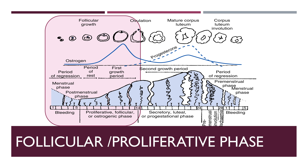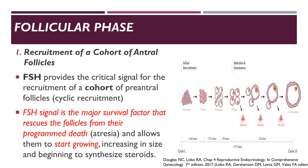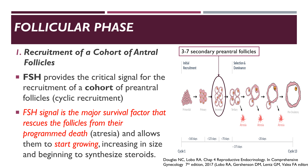Let's first discuss the first half of the menstrual cycle, which is the follicular or the proliferative phase. The follicular phase is divided into three periods: first, the recruitment of a cohort of antral follicles; followed by selection of a dominant follicle from this cohort; and finally, the growth of the selected dominant follicle. It is FSH, or the follicle-stimulating hormone, that provides the critical signal for the recruitment of a cohort of pre-antral follicles — so-called cyclic recruitment.